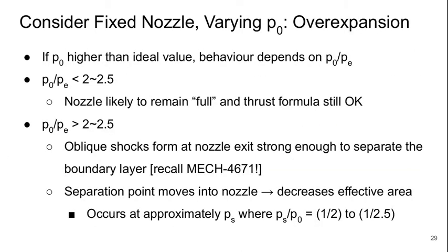Next let's consider over-expansion. Basically this means that if P-naught is higher than the ideal value, then the details of what happens depend on the value of P-naught over PE. If P-naught over PE is less than about 2 to 2.5, then it's likely that the nozzle is going to remain full of flow and again our thrust formula is still okay.